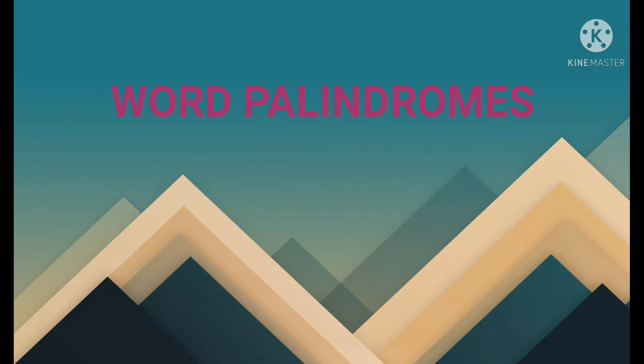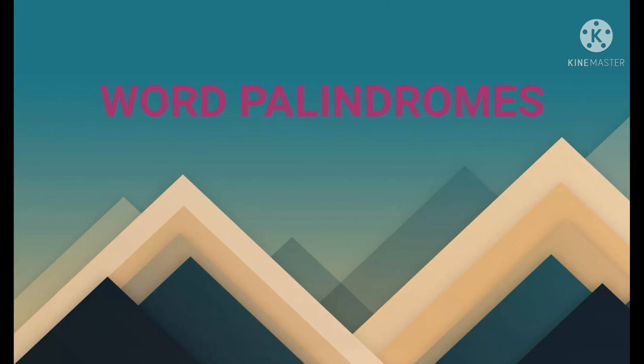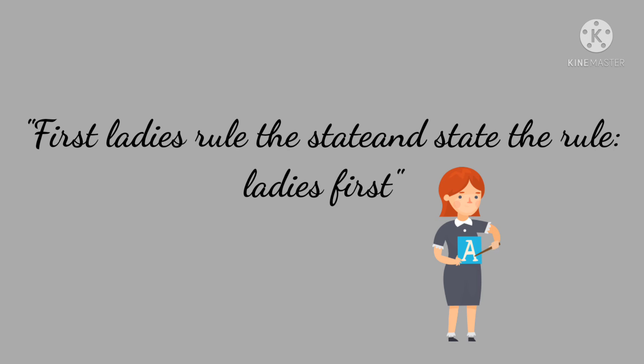Now coming to word palindromes: these palindromes use whole words rather than letters or characters. For example, 'First ladies rule the state and state the rule, ladies first.' Here, instead of matching each character, the whole sentence can be read forward and backwards. These are word palindromes.